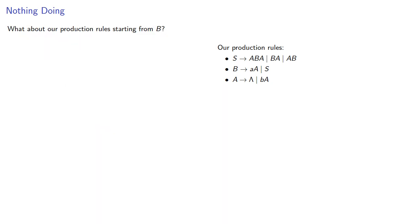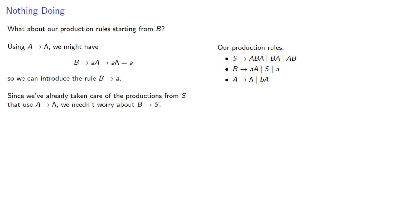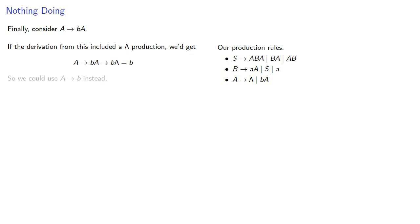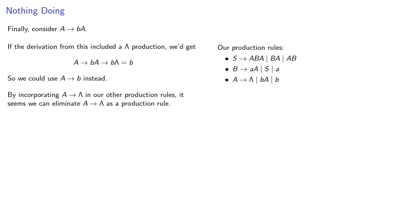What about our production rules starting from B? Using A produces lambda, we might have B produces AA, which produces A lambda, which just produces A, so we can introduce the rule B produces A. Note that since we've already taken care of the productions from S that use A produces lambda, we don't need to worry about the production B produces S. Finally, let's consider the rule A produces BA. If the derivation from this included a lambda production, we'd get A produces BA, which produces B lambda, which produces B, so we could use A produces B instead. By incorporating A produces lambda into our other production rules, we can eliminate it. In this case, since lambda isn't part of the language, we can entirely eliminate that production rule.